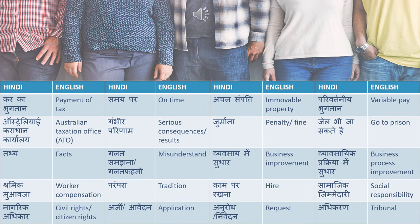If you can translate ATO, it will make a very good impression. So australiyai karadhan karayalay means Australian Taxation Office. Gambhir parina means serious consequences — serious results. Jurmana means penalty or fine. Both penalty and fine can be translated as jurmana. Jail bhi ja sakte hain means go to prison. Tathya means facts. Galat samajhna ya galat fahmi means misunderstand.